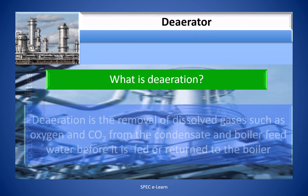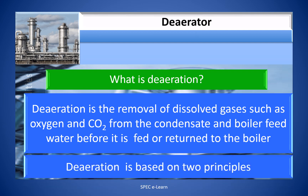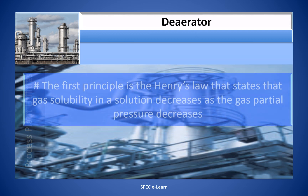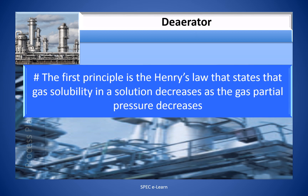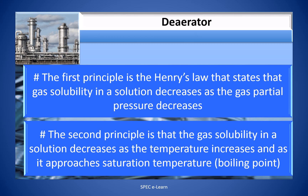What is de-aeration? De-aeration is the removal of dissolved gases such as oxygen and CO₂ from the condensate and boiler feed water before it is fed or returned to the boiler. De-aeration is based on two principles. The first principle is Henry's law, which states that gas solubility in a solution decreases as the gas partial pressure decreases. The second principle is that gas solubility in a solution decreases as the temperature increases and as it approaches the saturation temperature, that is, the boiling point.